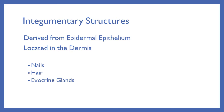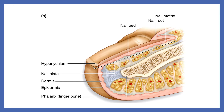Moving on to integumentary structures: these are derived from the epidermal epithelium but are located in the dermis. Your nails, hair, and exocrine glands are all actually derived from the epidermal epithelium — they've just moved down into the dermis. The nail is formed at the nail matrix; the root is there at the matrix and pushes forward down the length of the nail.